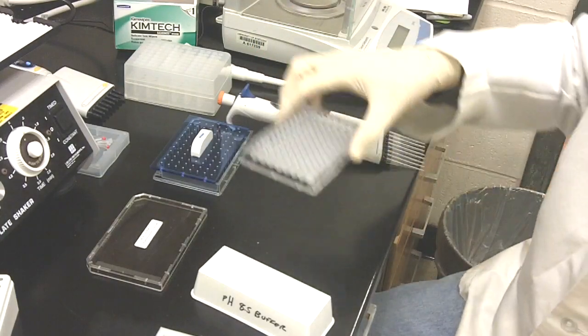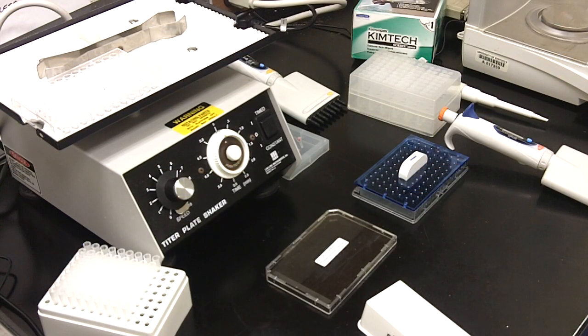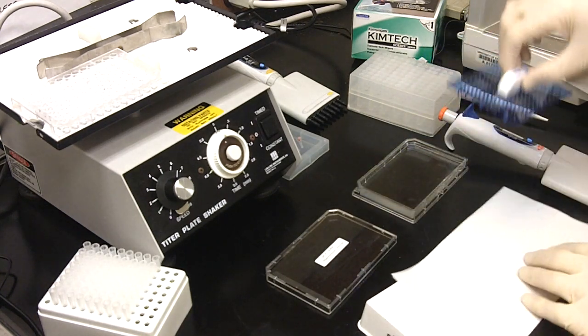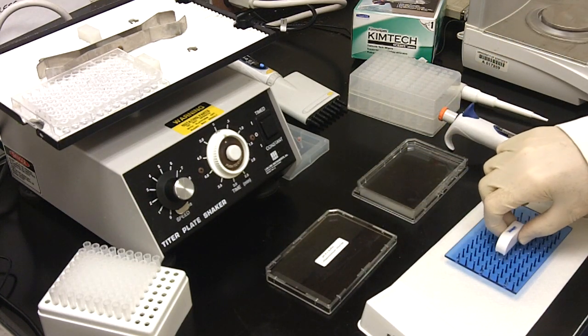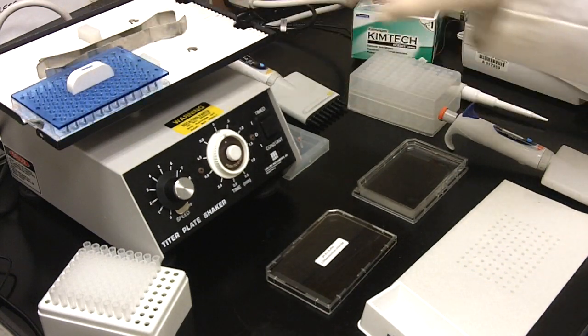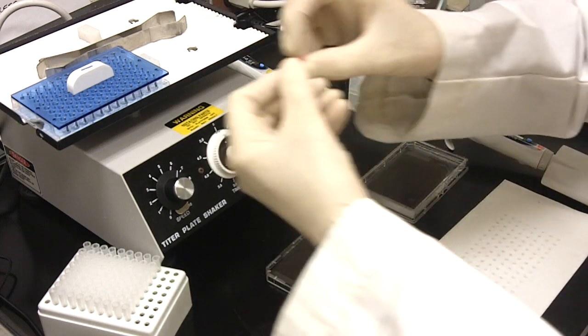The microplate is then placed on the tighter plate shaker. The reductor is then lifted from the holding tray, blotted on a paper towel and placed on the microplate. Locking pins are used to fasten the reductor in place.